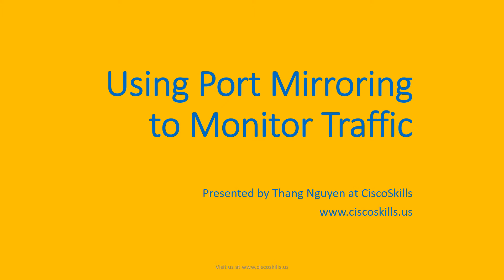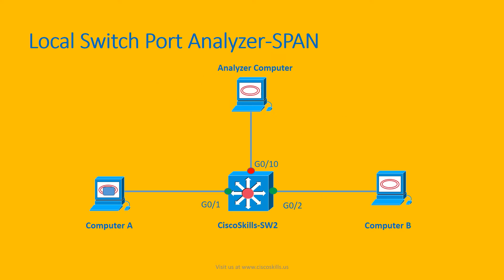In this section, we will talk about using port mirroring to monitor traffic — specifically the Local Switch Port Analyzer (SPAN). In this scenario, we want to monitor the traffic from computer A sent to computer B, and also the traffic from computer B sent back to computer A. The analyzer computer connects directly to the local switch.